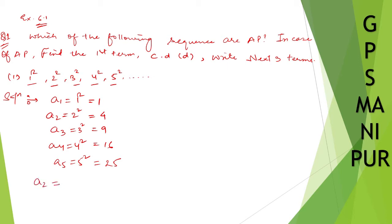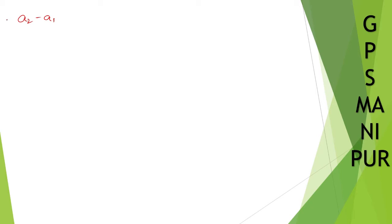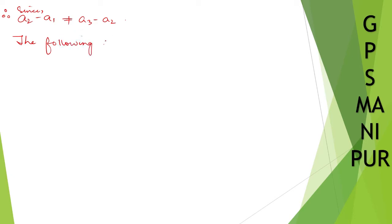Find a2 minus a1, which is 4 minus 1 = 3. And find a3 minus a2, which is 9 minus 4 = 5. Since these two are not equal — 3 and 5 are not equal — a2 minus a1 does not equal a3 minus a2. Therefore the given sequence is not an AP.